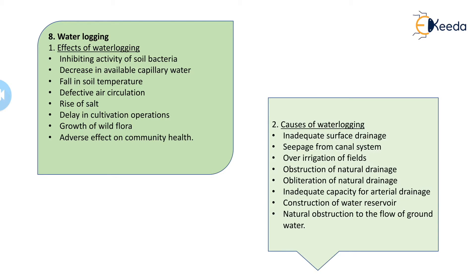The third effect is a fall in soil temperature. Some plants require a specific soil temperature for their growth, and because of the continuously waterlogged area, the temperature of the soil falls. The fourth effect is defective air circulation — there is no proper circulation between the soil particles because of the submergence and the saturated zone which develops within the soil pores.